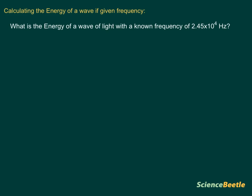If you read the problem: what is the energy of a wave of light with a known frequency of 2.45 times 10 to the 4th Hertz. If we underline the parts that we know, we know the frequency, and that frequency is this number here, 2.45 times 10 to the 4th power. What we're trying to find out is the energy.